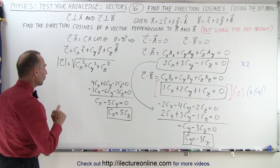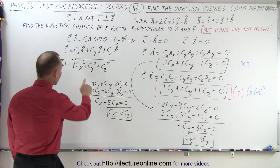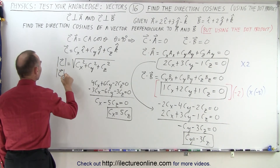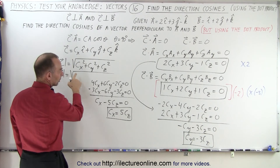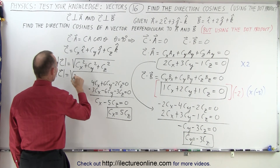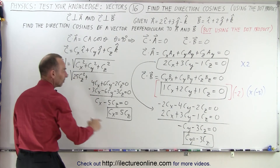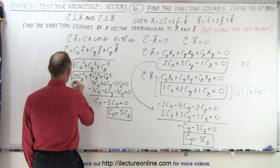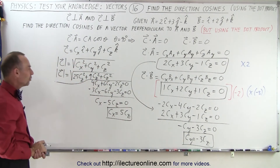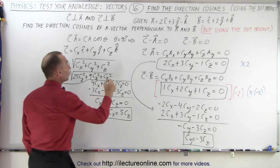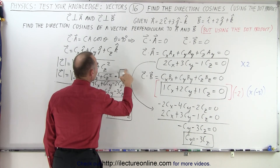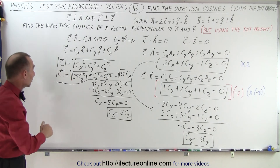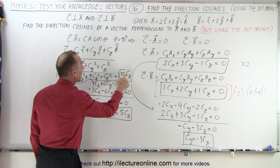Now I'm ready to find the direction cosines. What I'm going to do is replace C sub X and C sub Y with their expressions in terms of C sub Z. So the magnitude of C equals the square root of C sub X squared — which is (5 C sub Z)² = 25 C sub Z² — plus C sub Y squared — which is (−3 C sub Z)² = 9 C sub Z² — plus C sub Z squared. That equals the square root of 35 C sub Z squared, which is the square root of 35 times C sub Z.